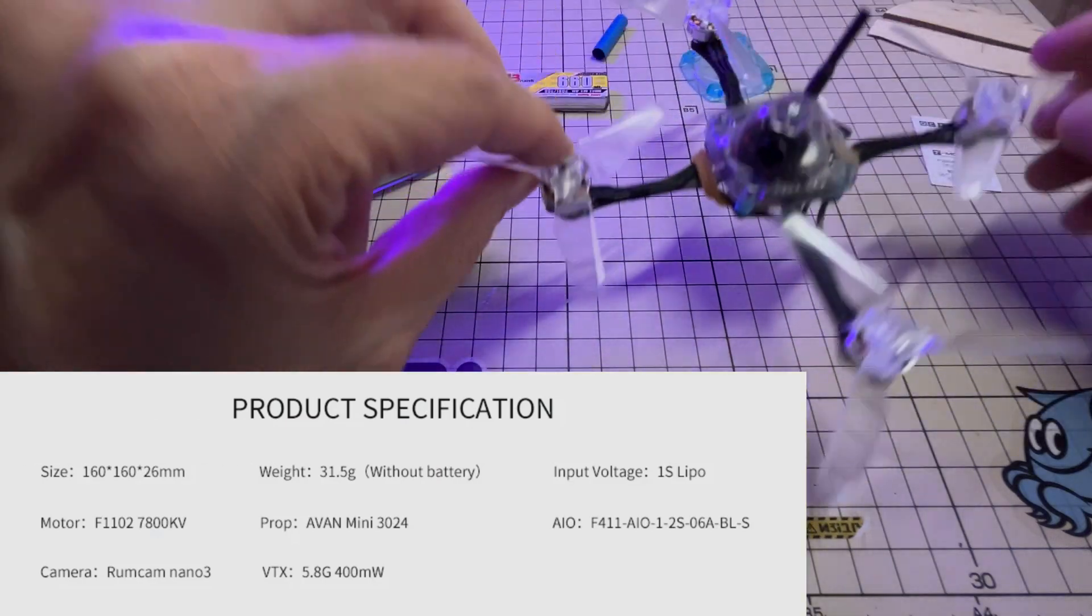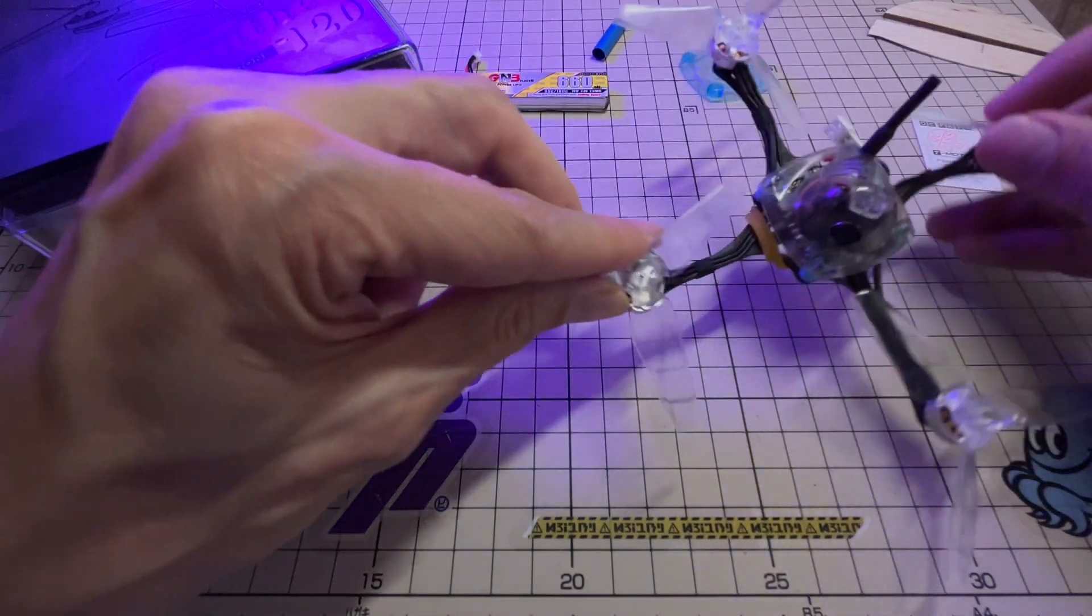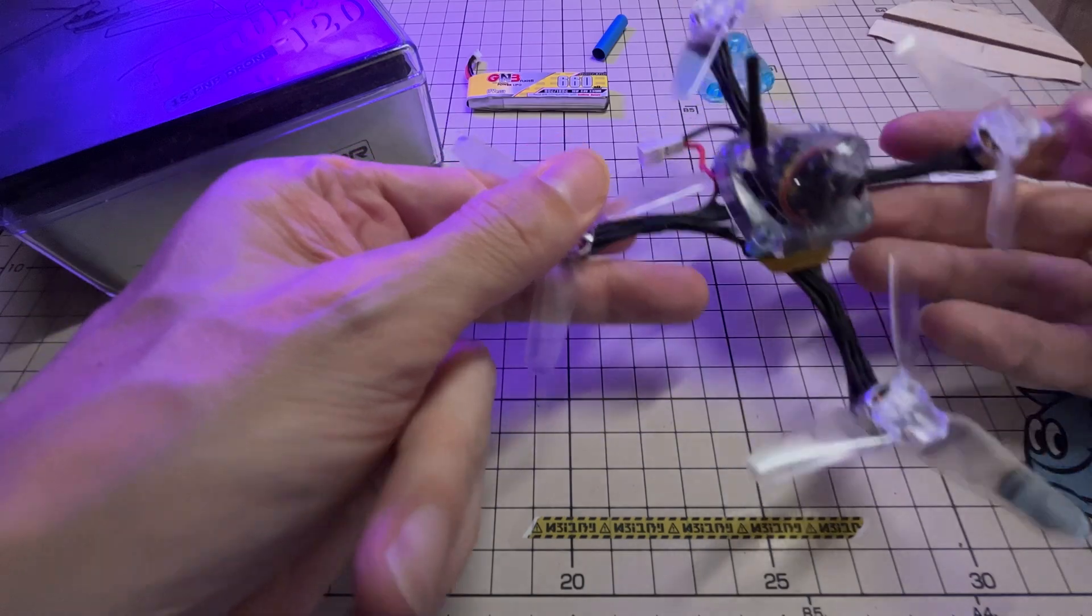At this weight comes at about 31 grams, and then you have to add your own receiver, which in my case I put in a little ELRS receiver.